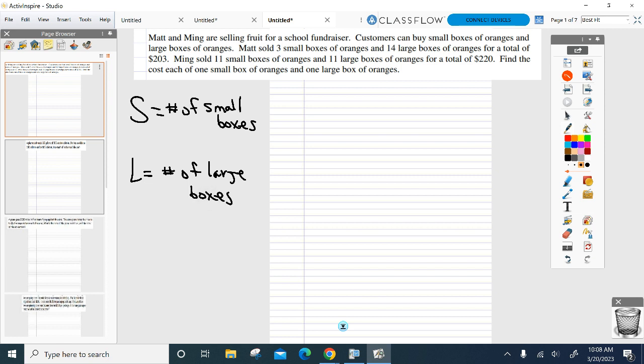I'll help you set up the equation. You guys are on your own after I'm done talking, solving for it. All right, first thing, let's start with Matt. Three small, 14 large, total of 203. There's my first equation written out for you there. Three small, 14 large, 203 bucks. There it is.